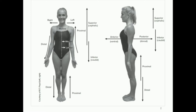When talking about limbs — whether arms or legs — we use distal and proximal. If something is further away from the insertion of the limb to the torso, it's more distal. If it's closer to that insertion point, it's more proximal. For example, the hand is more distal and the elbow is more proximal. Similarly, the ankle is more distal relative to the knee, which is more proximal.